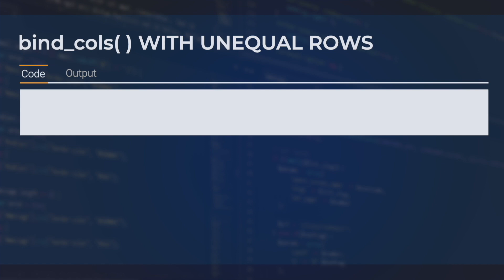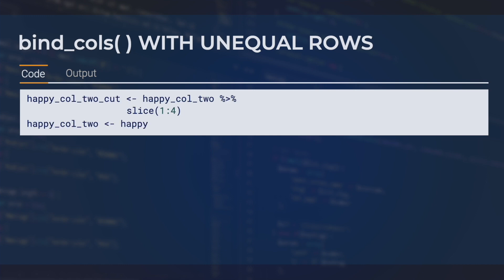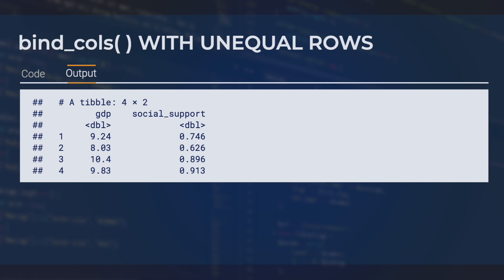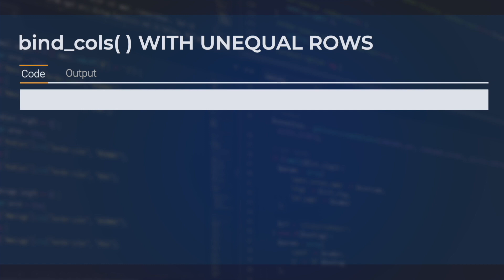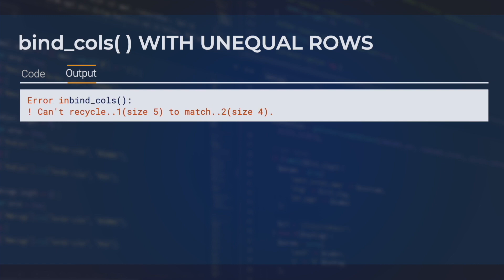Can you use bindCols on two data frames if they don't have the same number of rows? To see if this is possible, let's first remove the last row from happyCols2 and save the output as happyCols2cut, which looks like this — a data frame with four rows. We see that if we try to apply bindCols to these two data frames with unequal row numbers, R gives us an error message. So to use bindCols, you must ensure that both data frames have the same number of rows.